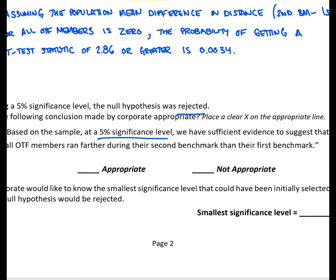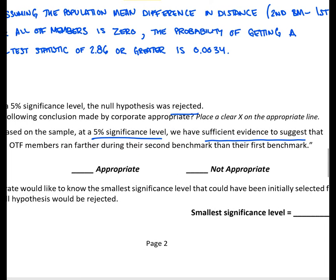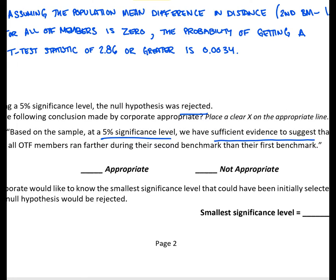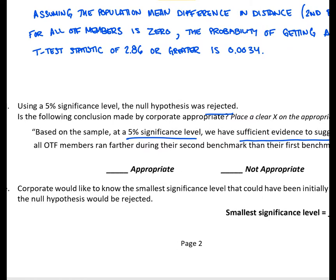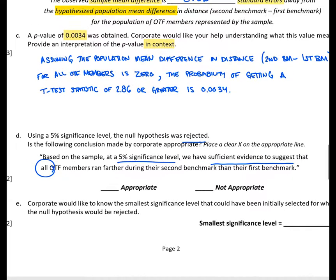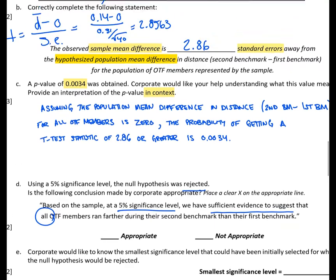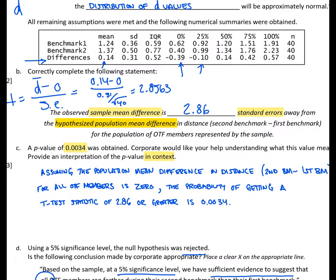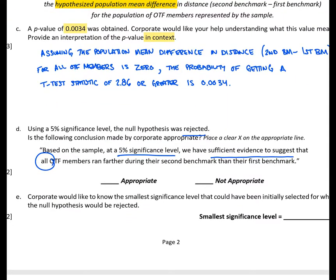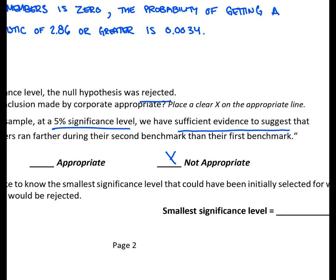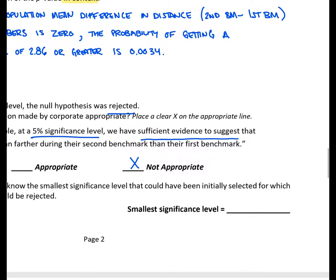It starts out with our 5% significance level. That's good. Sufficient evidence to suggest, and we are concluding that OTF members are doing better their second time around than their first. The big issue here is that we're saying that everyone did better the second time than the first time, and that's simply not true. In this setting, we're talking about our population mean difference. So we're saying, how much better did OTF members do on average? And if we look at the table, there are some members who got a negative difference, so they did do worse. We're being a little bit too strong here by saying all OTF members. So this statement would be not appropriate. If we wanted to rewrite it, we could simply add that this was true on average, and that would help fix this statement.